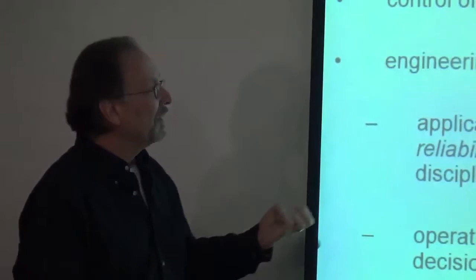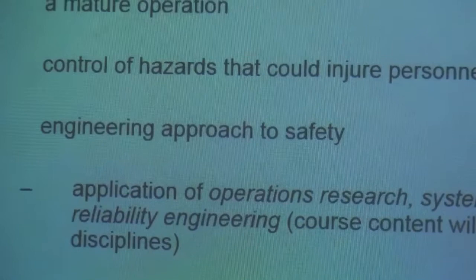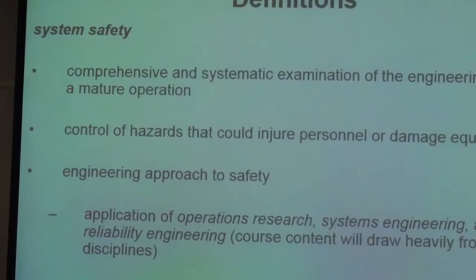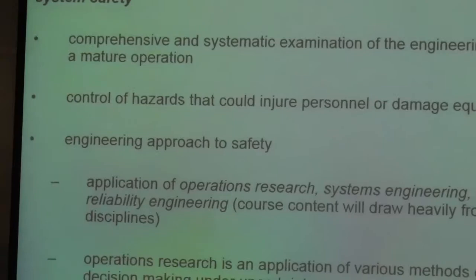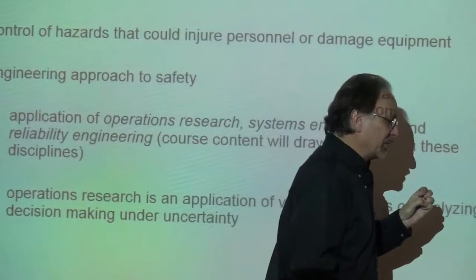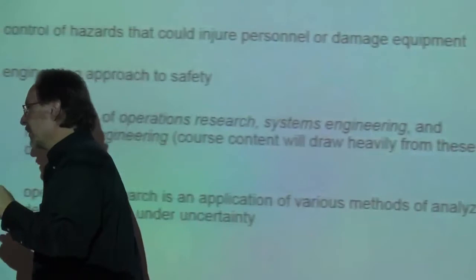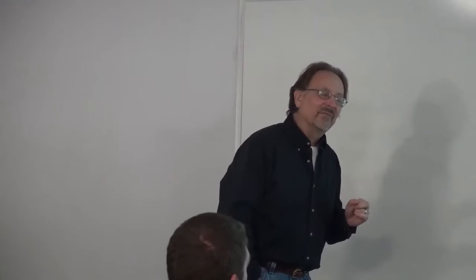System safety is really the application of things like operations research. Operations research is usually taught in industrial engineering, and sometimes in a less rigorous form in business schools. What they do with it is try to come up with quantitative methods — it's a highly quantitative field. They come up with quantitative methods for making decisions — that's why we have a whole topic on decision analysis — and for quantitative methods for simulating systems.